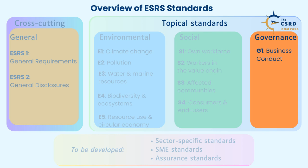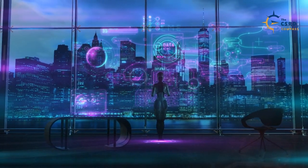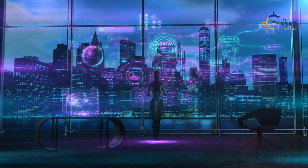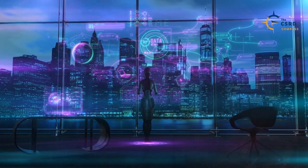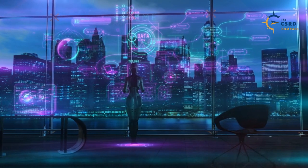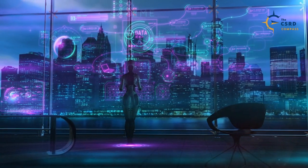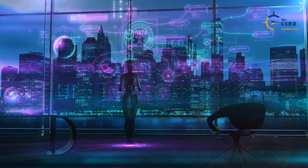4. Governance Matters: Although there is only one governance standard in the ESRS set — G1, Business Conduct — companies will have to report on various sustainability matters. These include corporate culture, management of relationships with suppliers, anti-corruption and anti-bribery measures, political influence and lobbying, protection of whistleblowers, animal welfare, and payment practices, especially with regards to late payment to small and medium enterprises (SMEs).